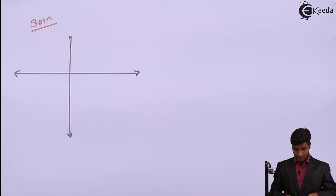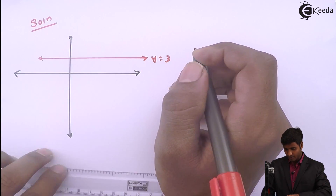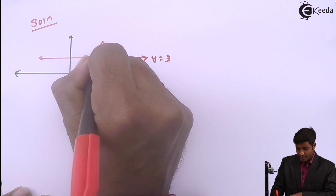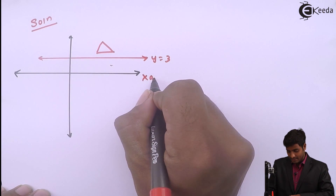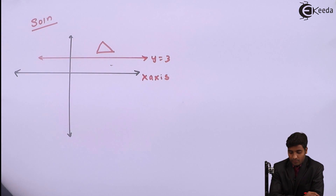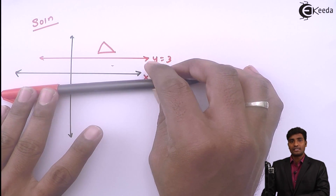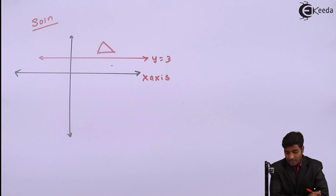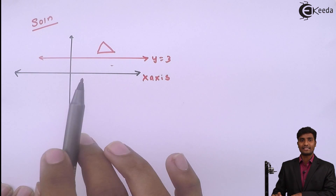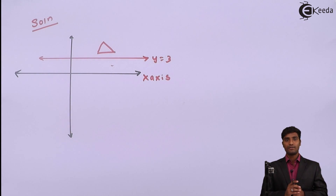Doing a rough diagram: this is the line y equals 3, and this is the triangle. This triangle is to be reflected about the line y equals 3, which is parallel to the x-axis. For that, we have to perform a series of transformations. First, we will bring the line y equals 3 onto the x-axis — that means we will coincide y equals 3 with the x-axis using a translation transformation.